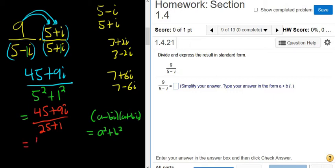So we end up with 45 plus 9i over 26. And then we can break it up, right? To break it up, you just do 45 over 26. Then you put the plus sign, so plus. Then you do 9i over 26.